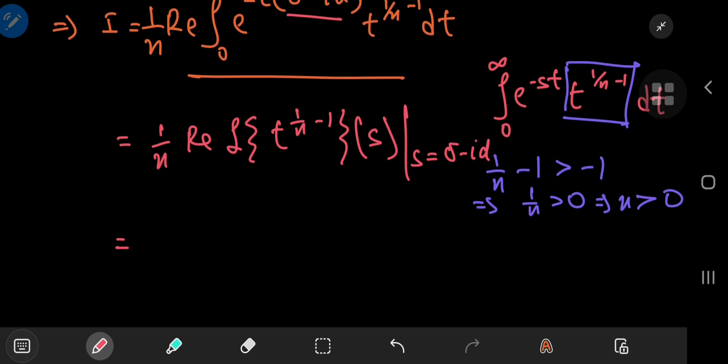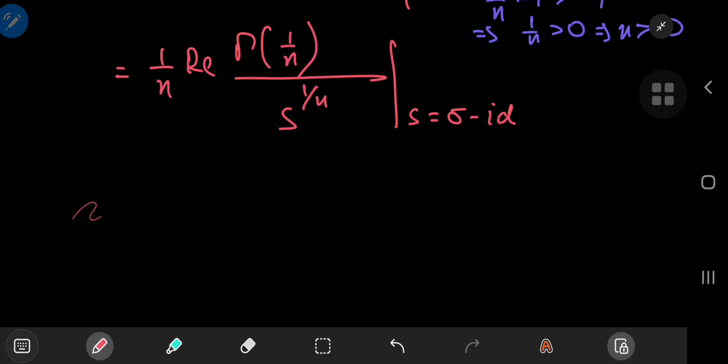And now if we look towards our trusted table of Laplace transforms, we have 1 by n times the real part of the gamma function evaluated at the exponent of the t variable plus 1 divided by the complex variable s raised to exactly the same exponent as the argument of the gamma function, which simplifies to 1 by n. So we have s to the 1 by n downstairs. And we're interested in the case where s equals sigma minus i times alpha. All this implies that i equals 1 by n times the real part of gamma of 1 by n divided by sigma minus i times alpha to the 1 by n.